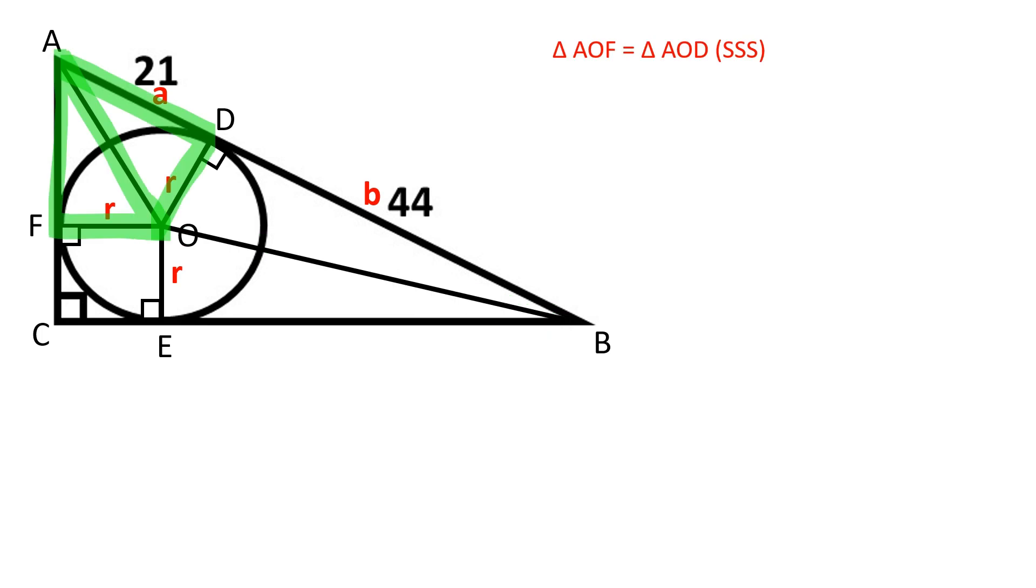Triangles AOF and AOD are congruent by three congruent sides. OA is shared by both triangles. OF and OD are congruent as radii of the same circle.